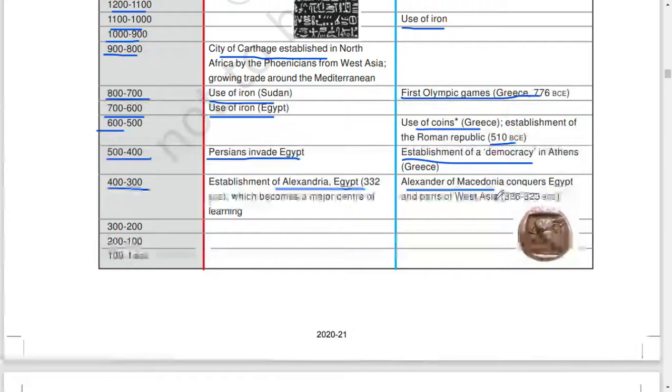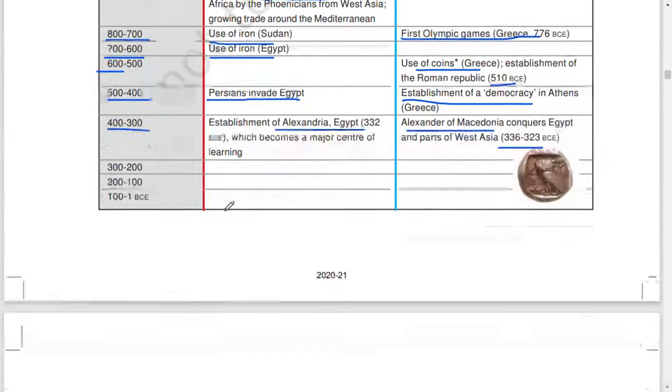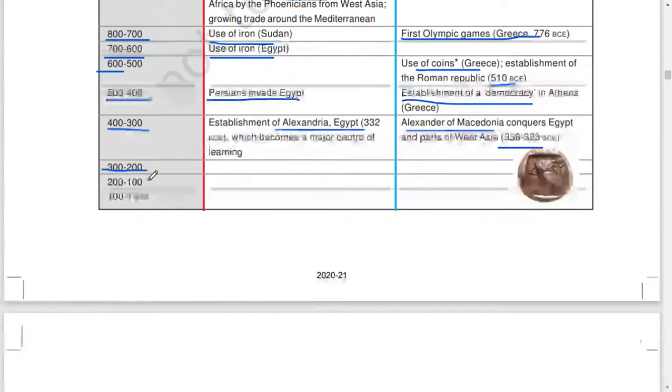400 to 300: Establishment of Alexandria, Egypt, 332 BCE, which becomes a major center of learning. Alexander of Macedonia conquers Egypt as part of West Asia, 336 to 323 BCE. 300 to 200, 200 to 100, 100 to 1 BCE.